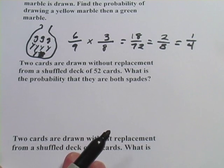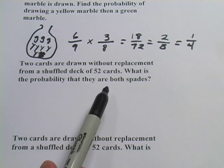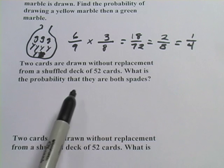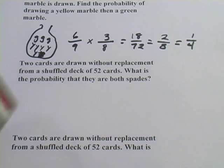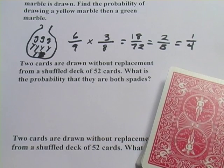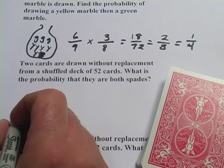Now, we've got a couple of problems here that have to do with cards. And these can be really tricky problems. It says 2 cards are drawn without replacement from a shuffled deck of 52 cards. What is the probability that they're both spades? So, you've got a deck of cards, and you need to know a couple of facts. First of all, how many cards are in a deck of cards? Well, that's 52, at least when you start.